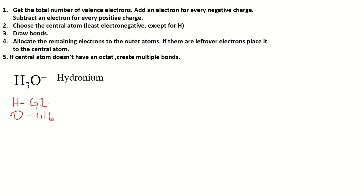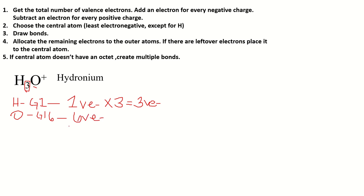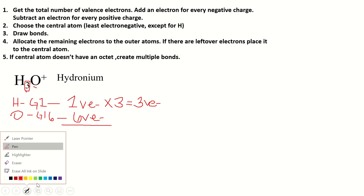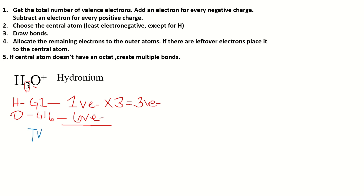The valence electrons of hydrogen: we have only one valence electron. We have 3 hydrogen atoms, so we multiply: 1 times 3 gives 3 valence electrons. For oxygen we have 6 valence electrons. Let's get the total: 6 plus 3 gives us 9 valence electrons.